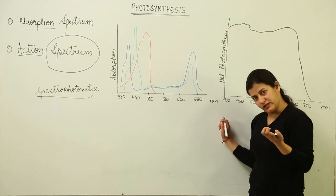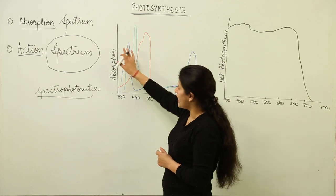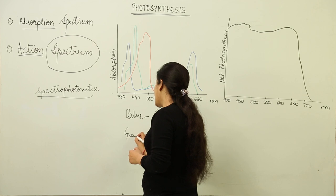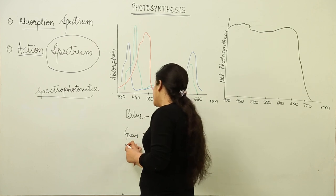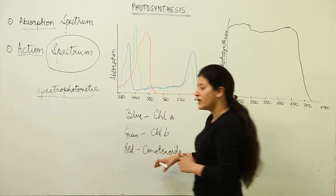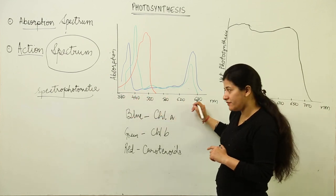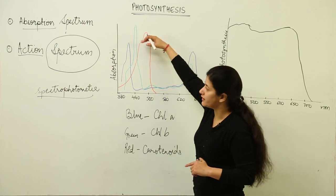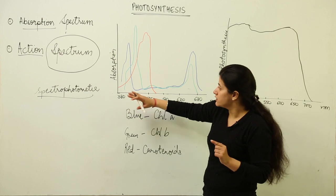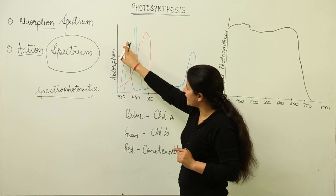The absorption spectrum shows us how each photosynthetic pigment absorbs different wavelengths — which wavelength it absorbs and where the absorption is maximum. I have used three colors to represent this: the blue part represents chlorophyll a, which is a photosynthetic pigment; the green part represents chlorophyll b; and the red part represents carotenoids. All the pigments except the chlorophylls comprise the carotenoids, specifically beta-carotene. The wavelengths are shown on the x-axis, and higher regions on the curve indicate greater absorption of energy by a particular pigment.